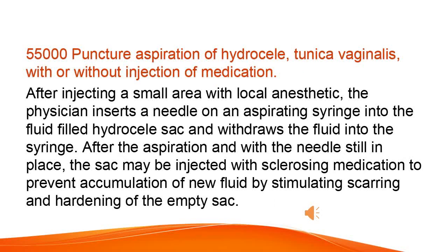Puncture aspiration of hydrocele, tunica vaginalis, with or without injection of medication. After injecting a small area with local anesthetic, the physician inserts a needle on an aspirating syringe into the fluid-filled hydrocele sac and withdraws the fluid into the syringe. After the aspiration, with the needle still in place, the sac may be injected with sclerosing medication to prevent accumulation of new fluid by stimulating scarring and hardening of the empty sac.